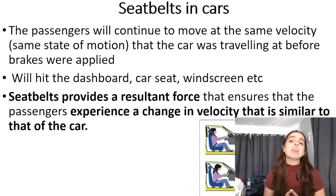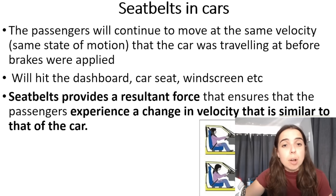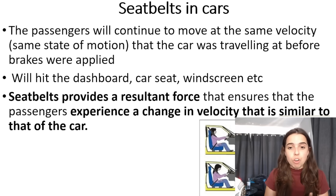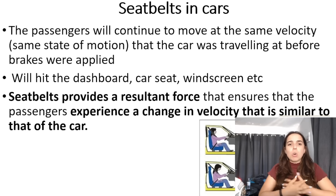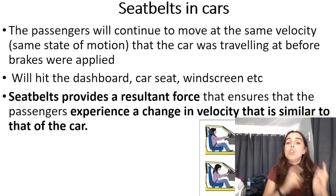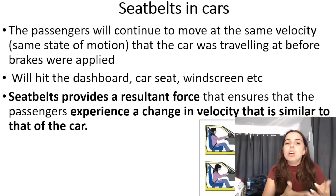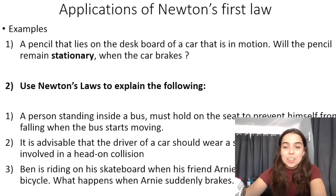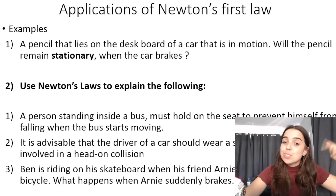What does wearing a seatbelt help with? The seatbelt provides the non-zero resultant force — a backwards force. If you've ever been in a car wearing a seatbelt and the car suddenly stops, that seatbelt pulls you back sharply against your seat. So the seatbelt provides a non-zero resultant or net force, which ensures that my velocity changes in the same way as the car's. When the car slows down, I slow down. You need to be able to use Newton's first law to explain these various scenarios.